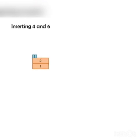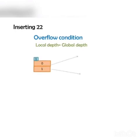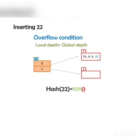Next, inserting 4 and 6. Both 4 (binary 100) and 6 (binary 110) have 0 in their LSB, so they are mapped to directory 0. Next, inserting 22: binary form of 22 is 10110, and its LSB is 0. The bucket pointed by directory 0 is already full, hence overflow occurs.